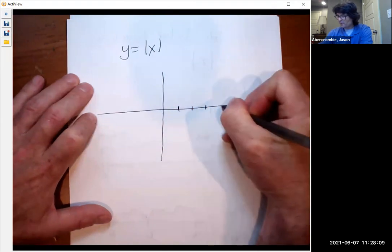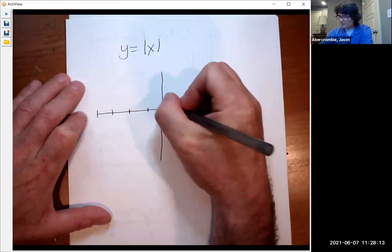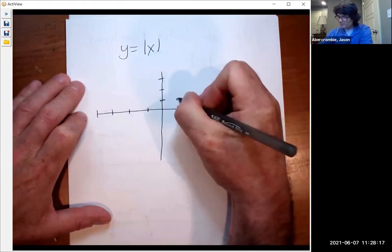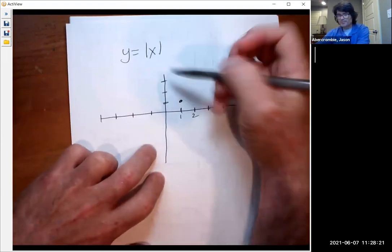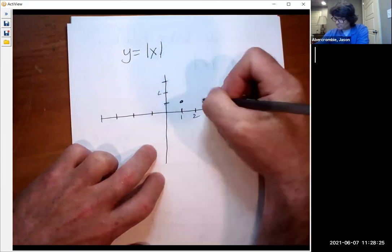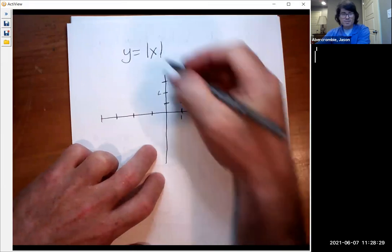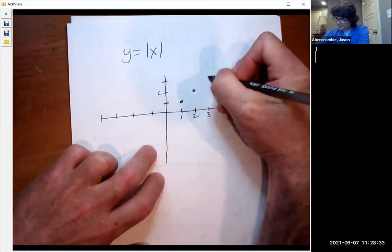If I put in the number one, the absolute value of one is going to be one. If I put in the number two into the absolute value right here, we're going to get two. And if I put in three to the absolute value, the absolute value of three is three. And so we're going to have something like this.